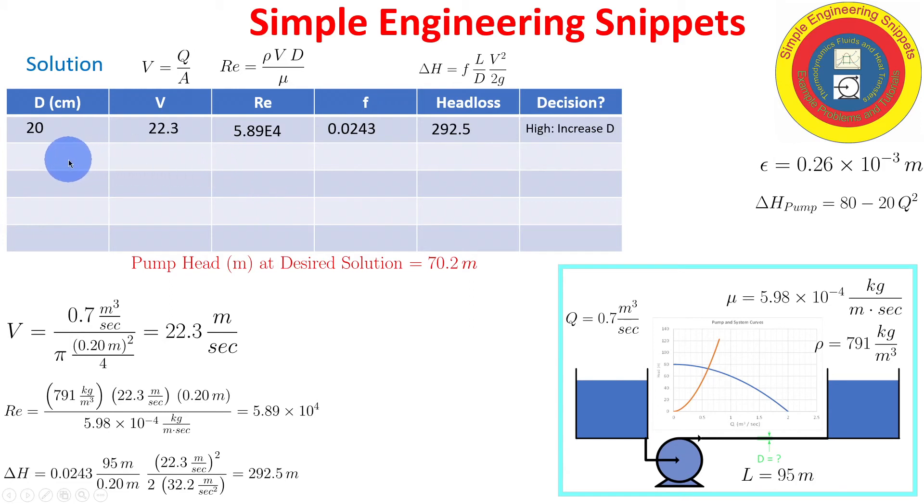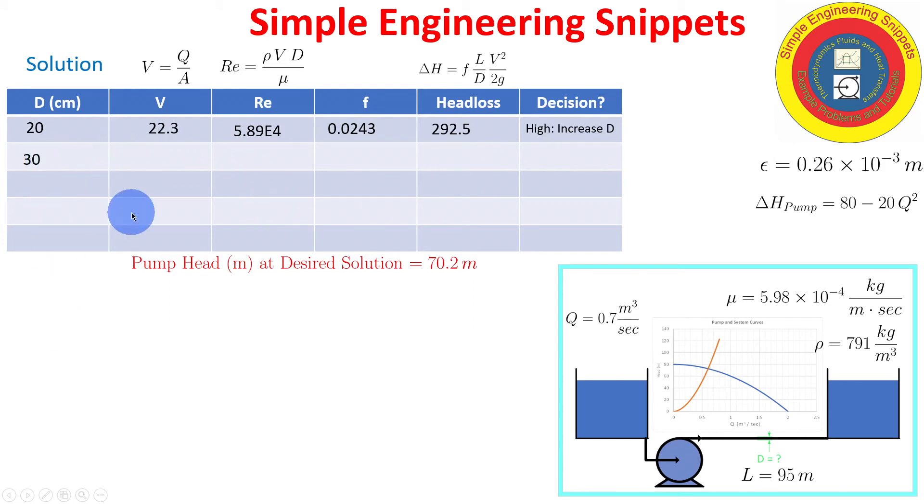So next iteration, let's go with 30 centimeters. And I'm not going to show the details and we'll walk through this. So we'll get the velocity, Reynolds number, friction factor, a little bit higher. Calculate the head loss and 38.8. Now that's significantly less than 70.2. So we will get more than the desired flow. So that's good but may not be optimal. Maybe we're spending too much money on pipe and we can get away with a smaller pipe somewhere between 30 and 20. So we're going to decrease the diameter.